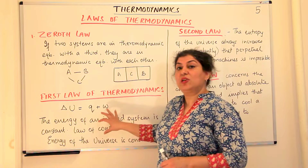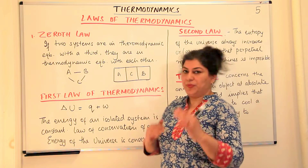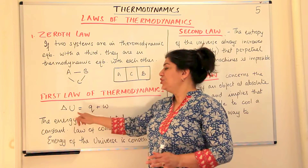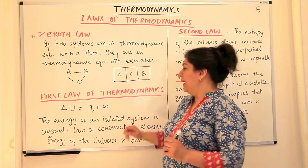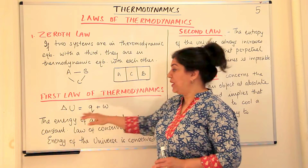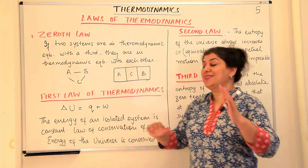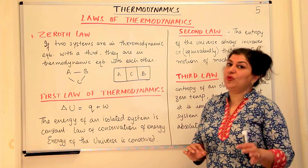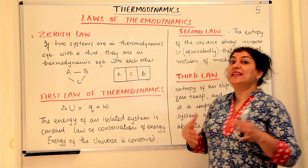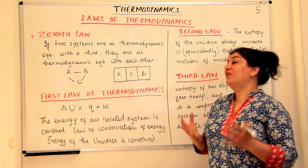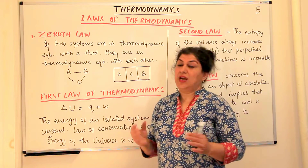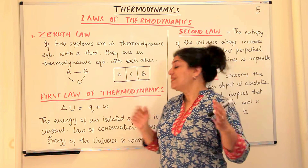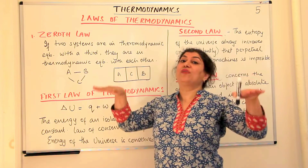Now we come to the first law of thermodynamics, which we covered in the previous video. The mathematical statement is delta U equals Q plus W. The statement is that the energy of an isolated system is constant. It is also known as the law of conservation of energy, meaning the energy of a system remains conserved — whatever the initial and final states, the total energy of the system is conserved, especially for an isolated system.